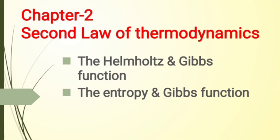Chemists are generally interested in systems that interact with their environment rather than isolated systems. In this chapter we will introduce two new state functions which can be used to determine the direction of a spontaneous process in terms of properties of the system only. These two functions are Helmholtz free energy and Gibbs free energy.